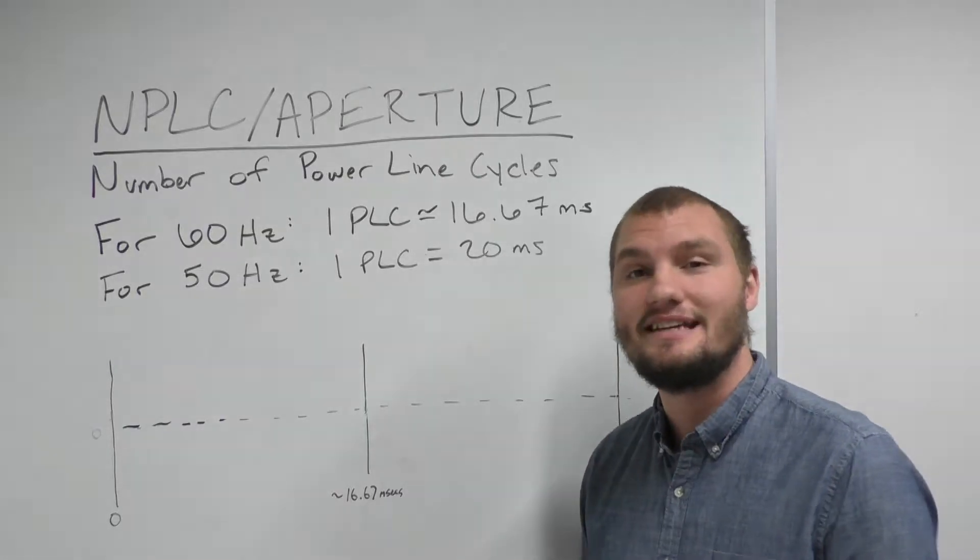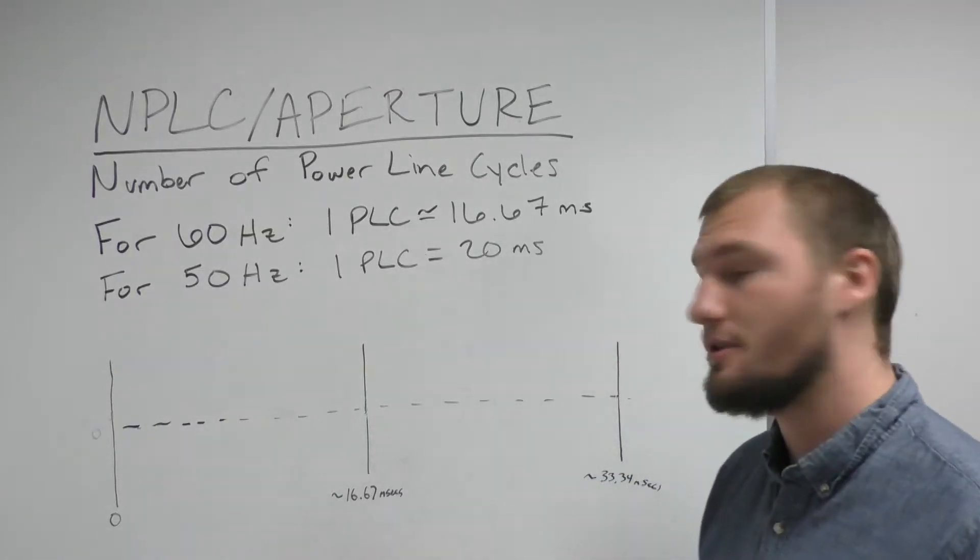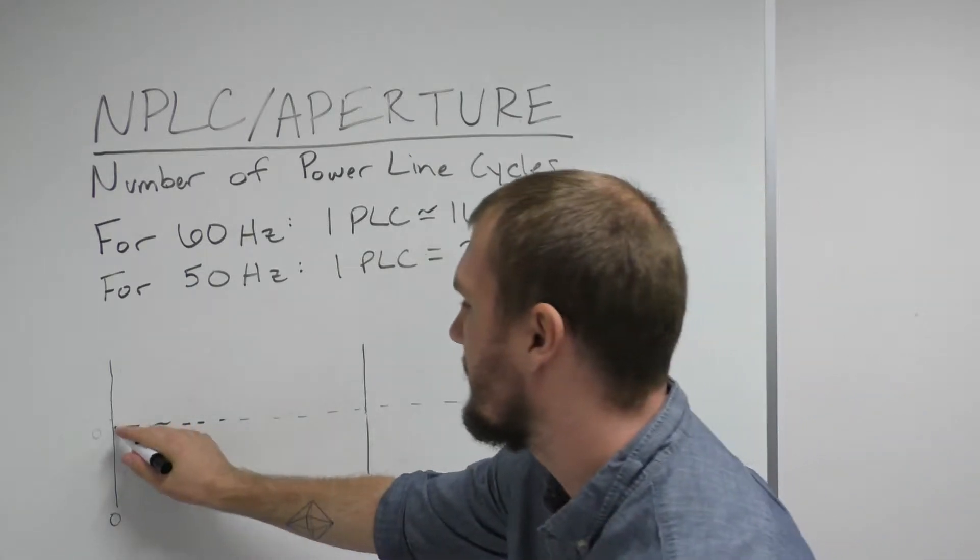By its very nature power line noise is periodic and so if we were to draw it on a graph it would look something like this.